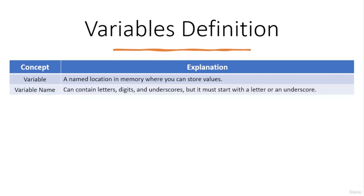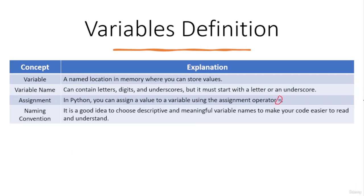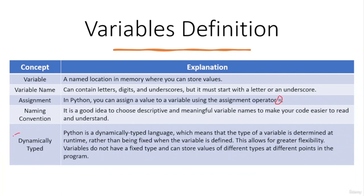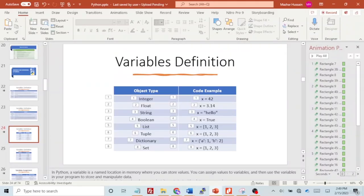A variable name can contain letters, digits, and underscores, but it must start with a letter or underscore, not a number. It is a good idea to choose descriptive and meaningful variable names to make your code easier to read and understand. Python is a dynamically typed language, which means the type of a variable is determined at runtime rather than when the variable is defined. This allows for greater flexibility — variables do not have a fixed type and can store values of different types at different points in the program.